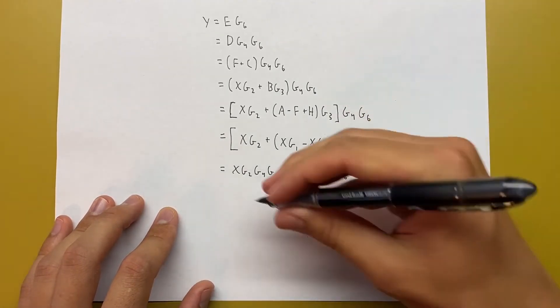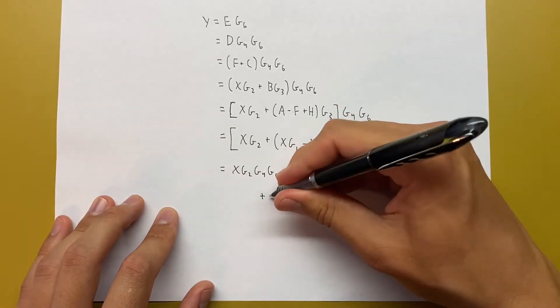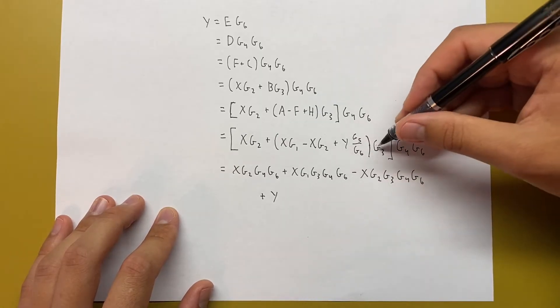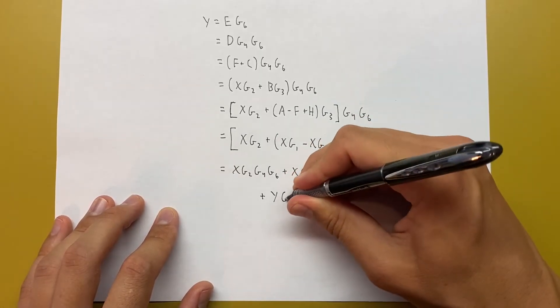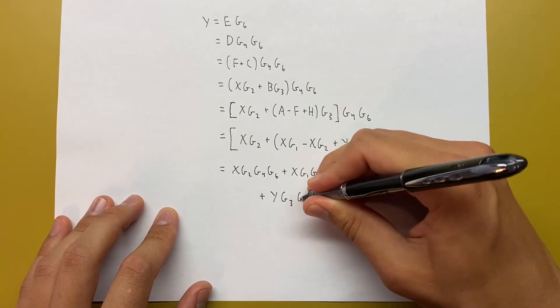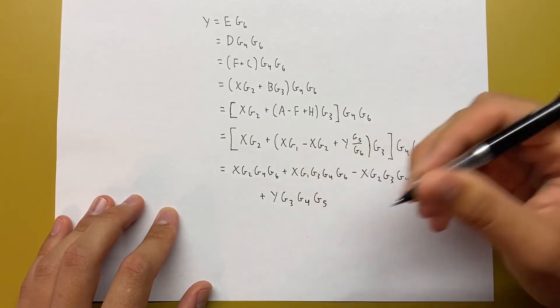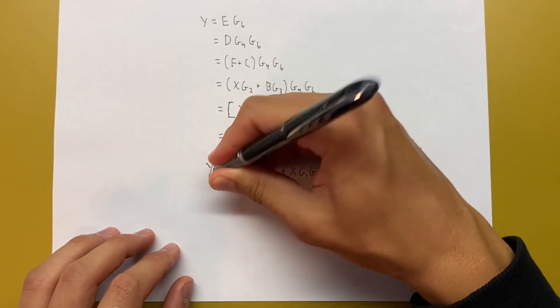And then our last term, I'm going to put it down here, plus Y, this G6 is going to cancel with that G6, so we'll just have G3 G4 G5. All right, and we have to remember that all of this is equal to Y.